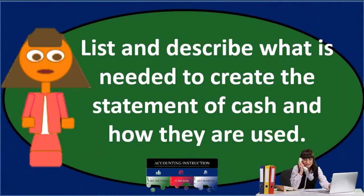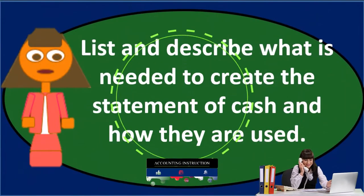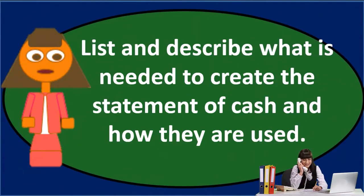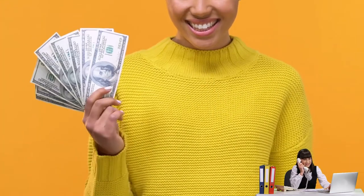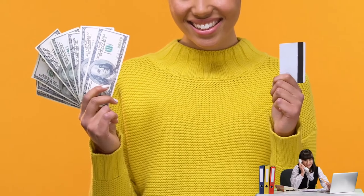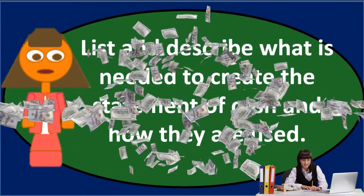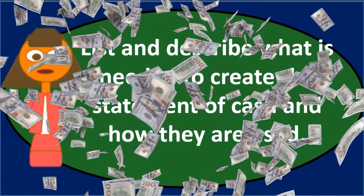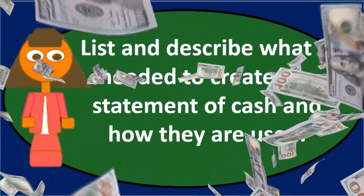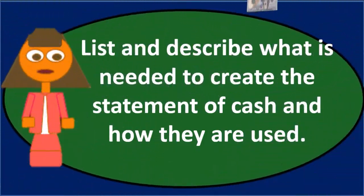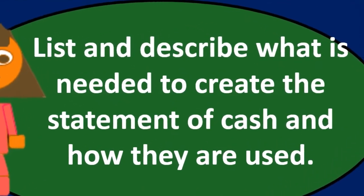So we're going to put the statement of cash flows together. It's going to be a representation that's going to show the change in cash or what the activities are that make up the change in cash from one period to another. So what are we going to need to make the statement of cash flows? Then we're going to need the two time periods. We're going to need at least a cash flow, of course, or where the cash was at the beginning of the time period and where it is at the end. So because that's what we're looking for, that change.